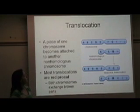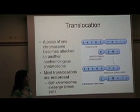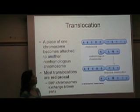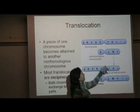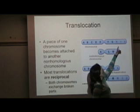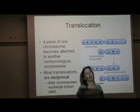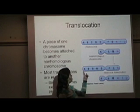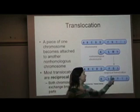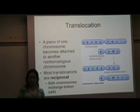A translocation is a switching of pieces between two non-homologous chromosomes. Most translocations are reciprocal and both chromosomes exchange broken pieces. So here we have two chromosomes that are not identical in size, shape, and genetic information. HIJ breaks off from the first chromosome and attaches to the second one, and a segment breaks off from the second and attaches to the first. So our new chromosomes become ABCDEFGN and KLMHIJ — both break off and switch.